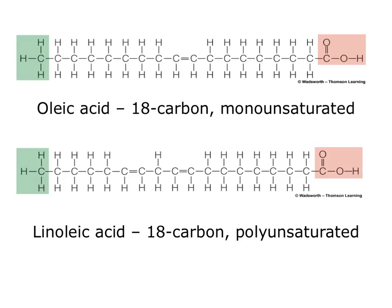Here are oleic acid (monounsaturated) and linoleic acid (polyunsaturated) as examples. These are important essential oils in your body. Both have 18 carbons, but linoleic acid has one extra double bond. Notice in the unsaturated version there is no hydrogen at the double bond carbons — where in the saturated version, hydrogens fill all positions across the chain, hence 'full' or 'saturated.'